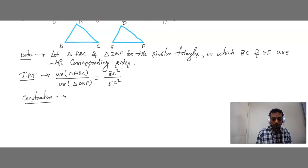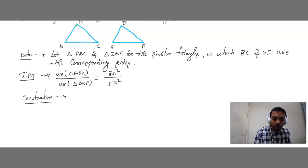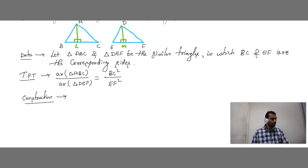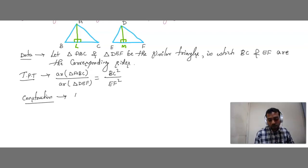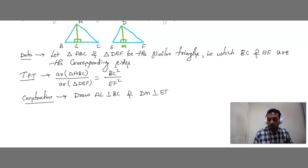Next is the construction. What we are going to draw: draw AL perpendicular to BC, and draw DM perpendicular to EF. So the construction statement is: Draw AL perpendicular to BC and DM perpendicular to EF.